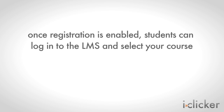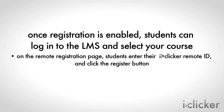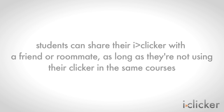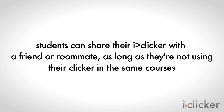Once student registration is enabled in your courses, students can simply log into the LMS and select your course. On the remote registration page, students enter their iClicker remote ID and click the Register button. Even if students are using iClicker for more than one course, they only need to register their clickers in one course and their registration data will automatically be applied to all their other LMS courses using iClicker. Students can share clickers with a friend or roommate as long as they are not using iClicker in the same courses.